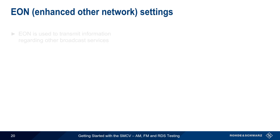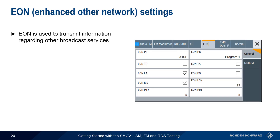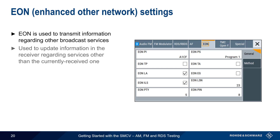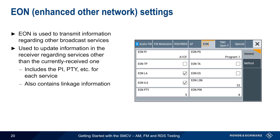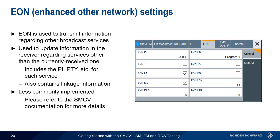EON, or Enhanced Other Network parameters, are used to transmit information regarding other broadcast services — that is, it updates information in the receiver regarding services other than the one currently being received. This includes common parameters such as PI and PTY, as well as information needed to link programs. EON is not commonly implemented, so please refer to the SMCV documentation if you'd like more detail about how to configure these parameters.